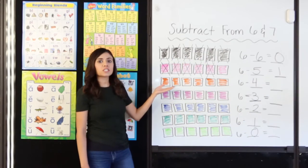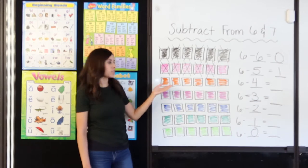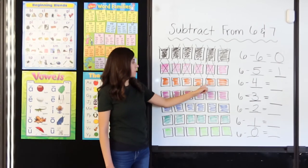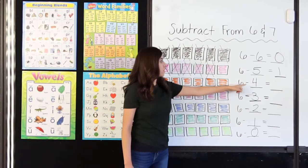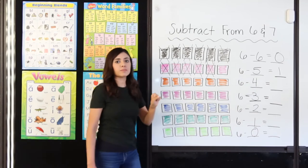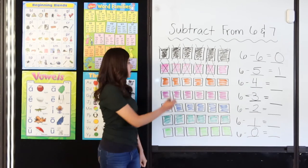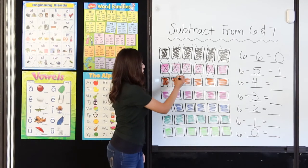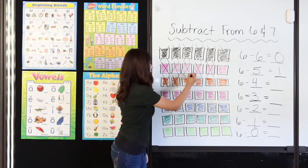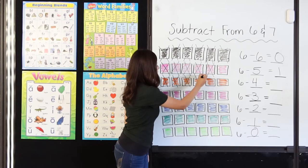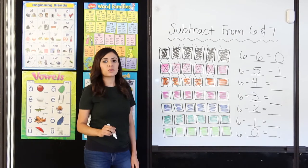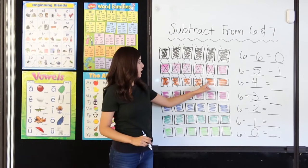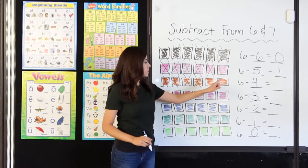Here I have 6 orange squares — 1, 2, 3, 4, 5, 6. I am going to cross off the 4 that I am taking away: 1, 2, 3, 4. How many squares do I have left? 1, 2.